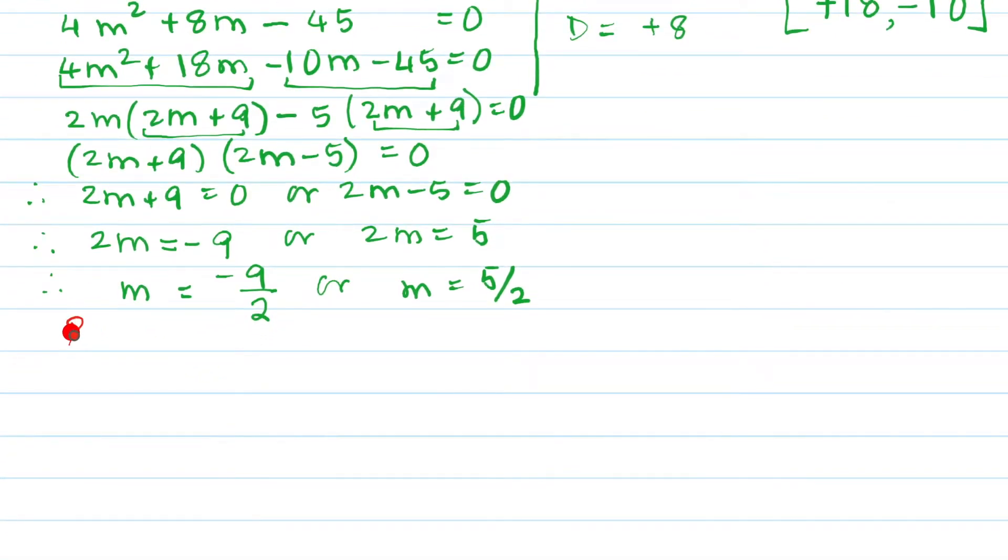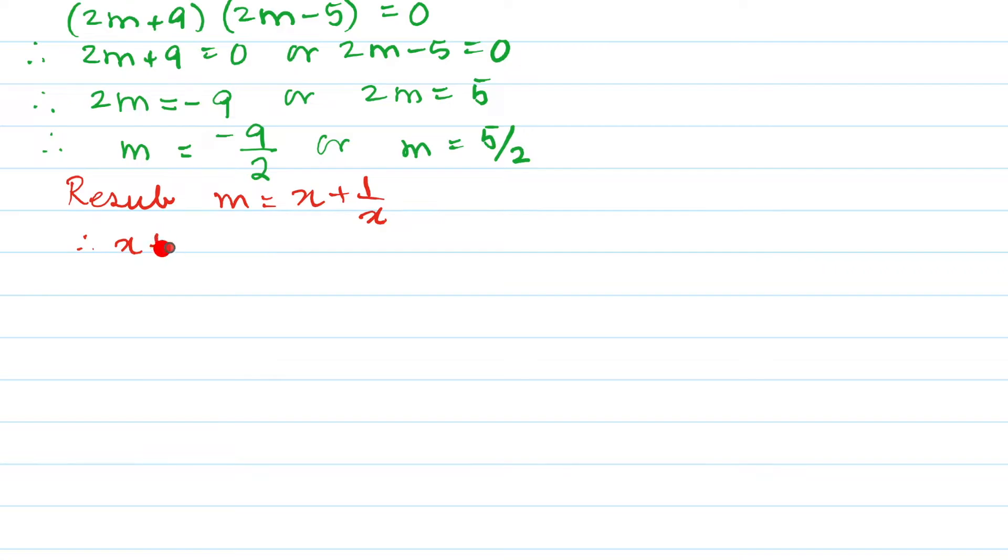So you are going to substitute the value of m because we said let x + 1/x be equal to m. So we will say resubstituting m = x + 1/x. Therefore, x + 1/x = -9/2 or x + 1/x = 5/2. So far so good. I hope you are getting this.